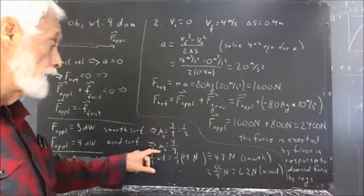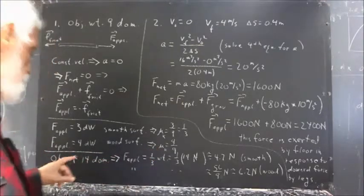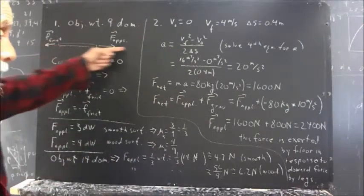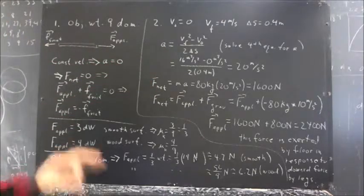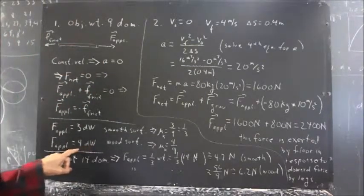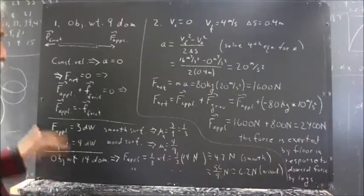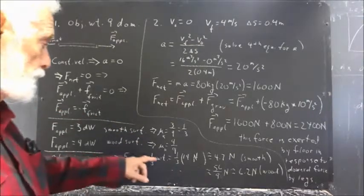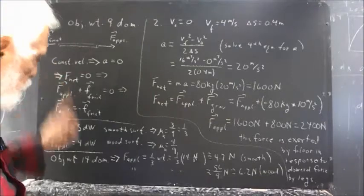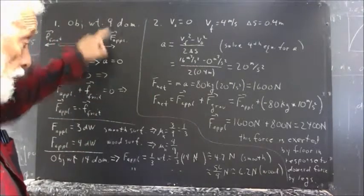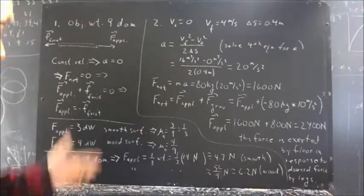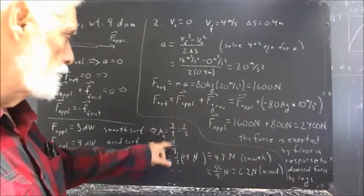On the wood surface, the coefficient of friction is found to be 4/9. The applied force is 4 domino weights, which moves the object at constant velocity — meaning zero acceleration — so the frictional force also has a magnitude of 4 domino weights in the opposite direction of the applied force. Since the frictional force is 4 domino weights and the weight of the object is 9 domino weights, the frictional force is 4/9 of the weight of the object, so the coefficient of friction is 4/9.